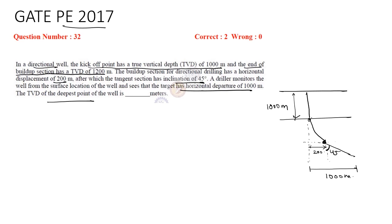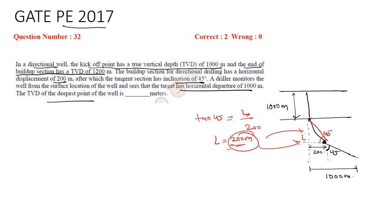We need to find out the TVD of the deepest point. Since this is 45 degrees, considering the triangle here — this triangle will also have 45 degrees. We need to calculate this particular depth. Let this be L; tan 45 will be equal to L upon 200, so L will be equal to 200m. So this particular section is 200m.